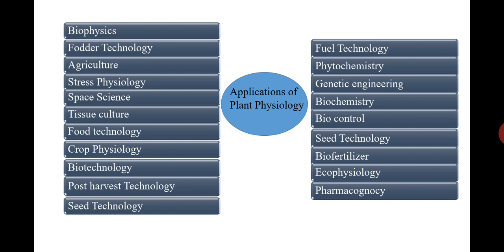Post-harvest technology means protecting the plant from post-harvest harm or post-harvest damage. We can store crops for a longer duration or process them. As mentioned in food technology, we can process and store crops for longer duration — that is post-harvest technology.